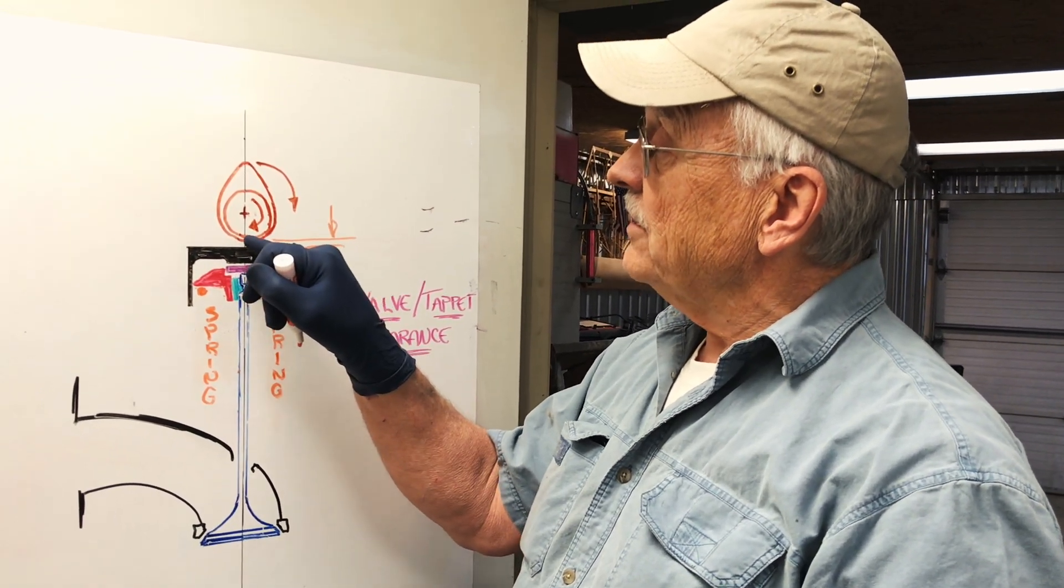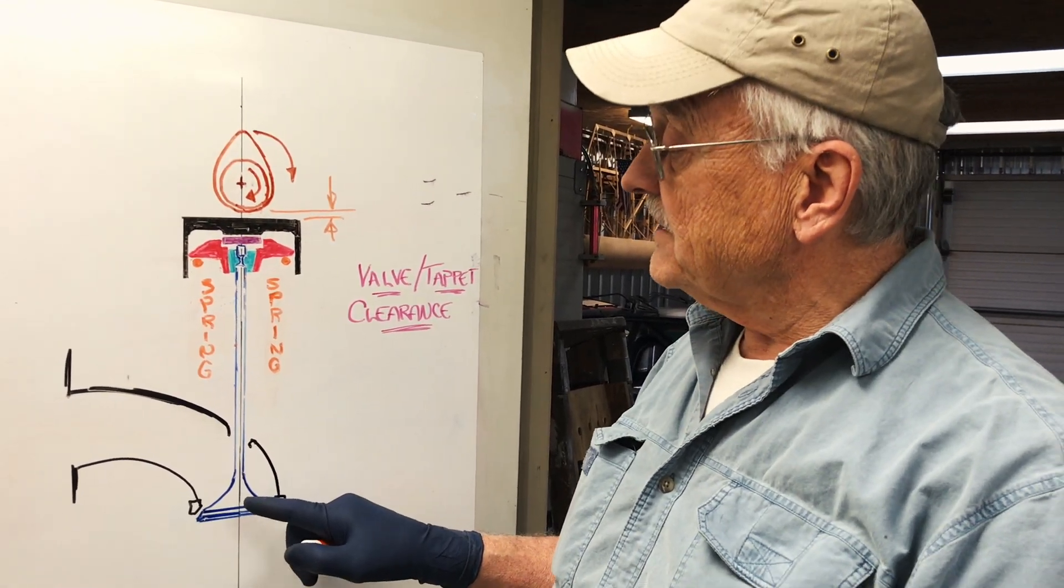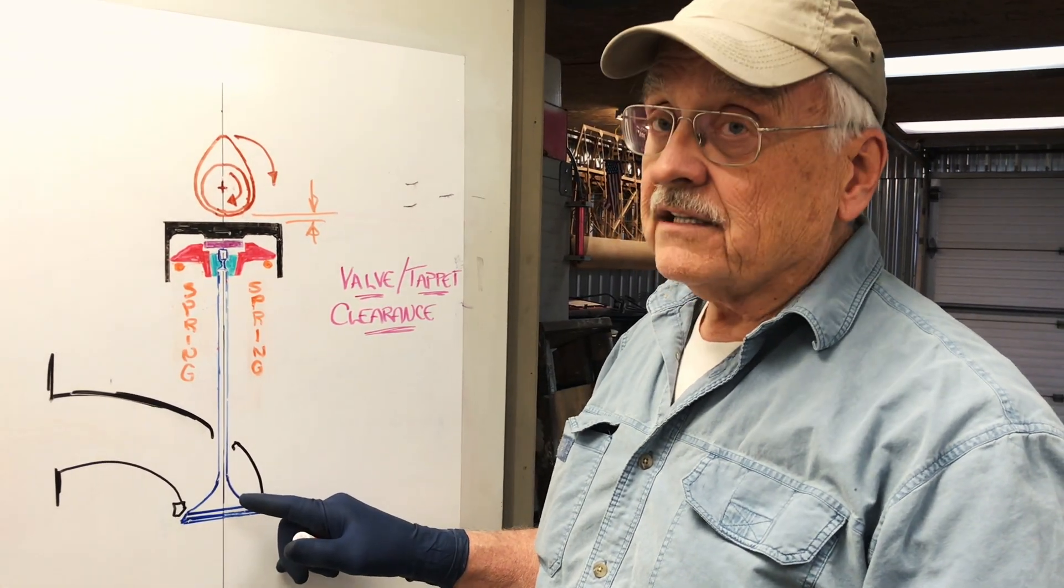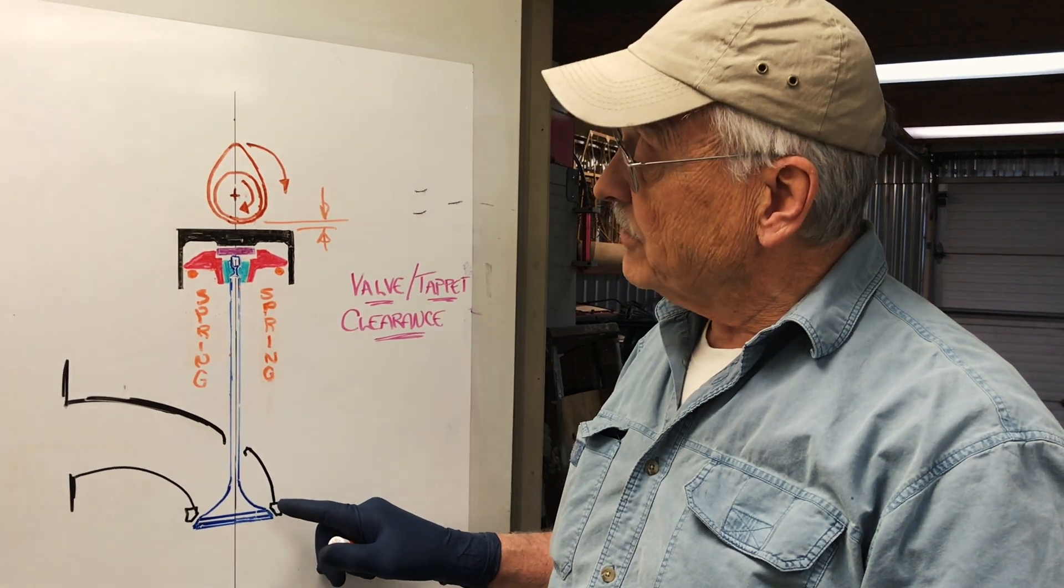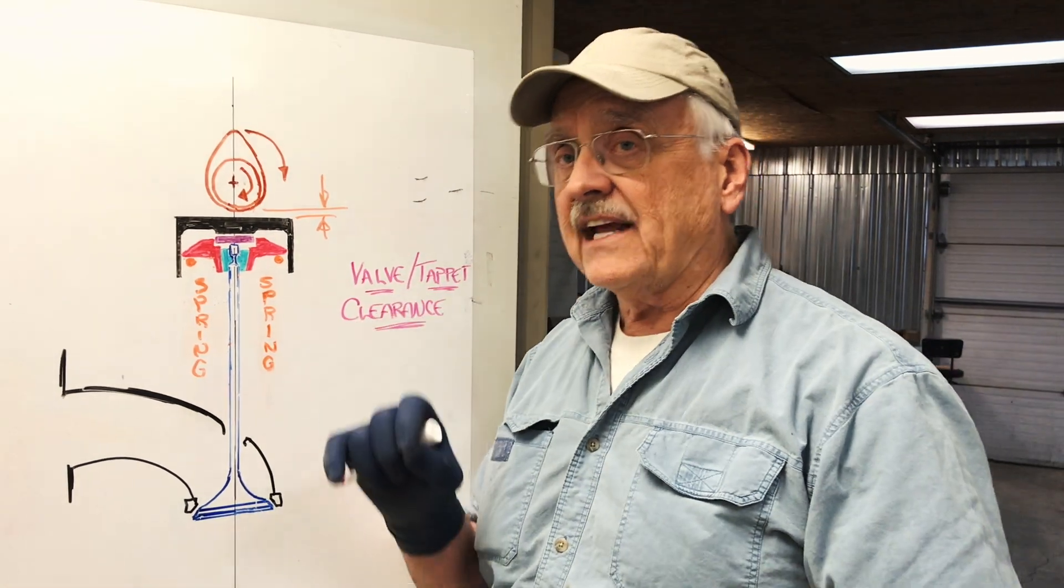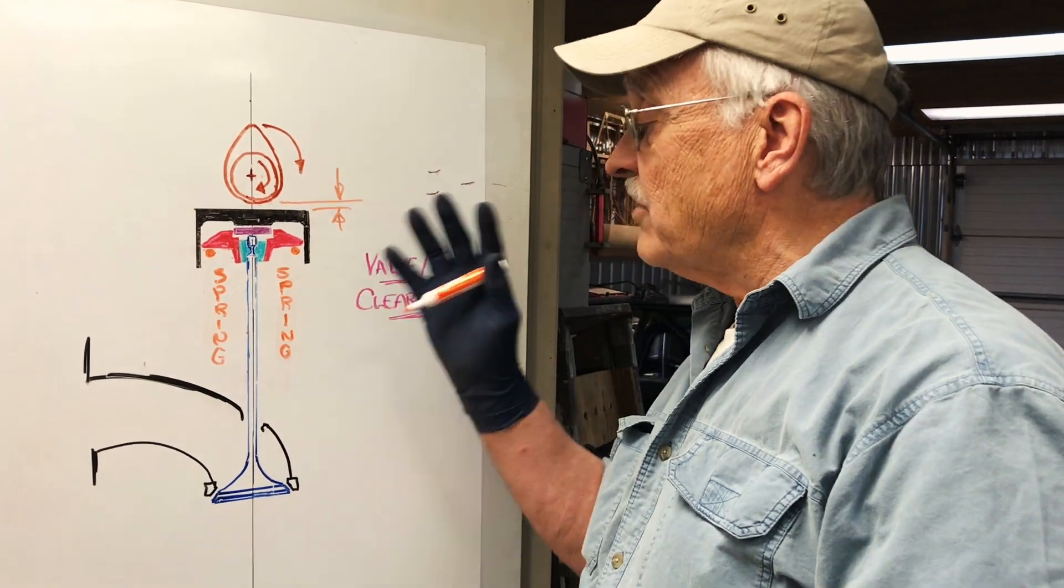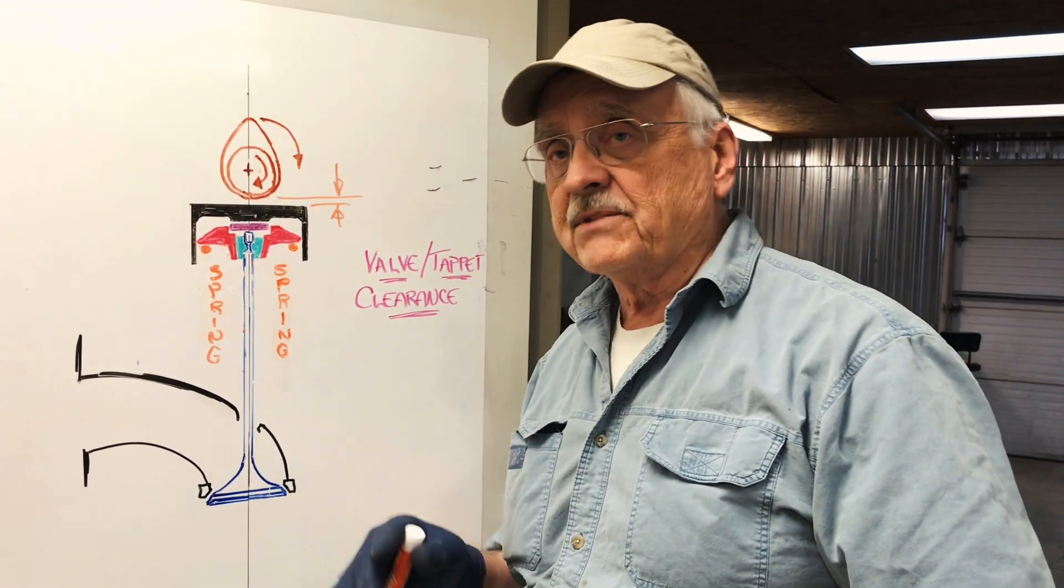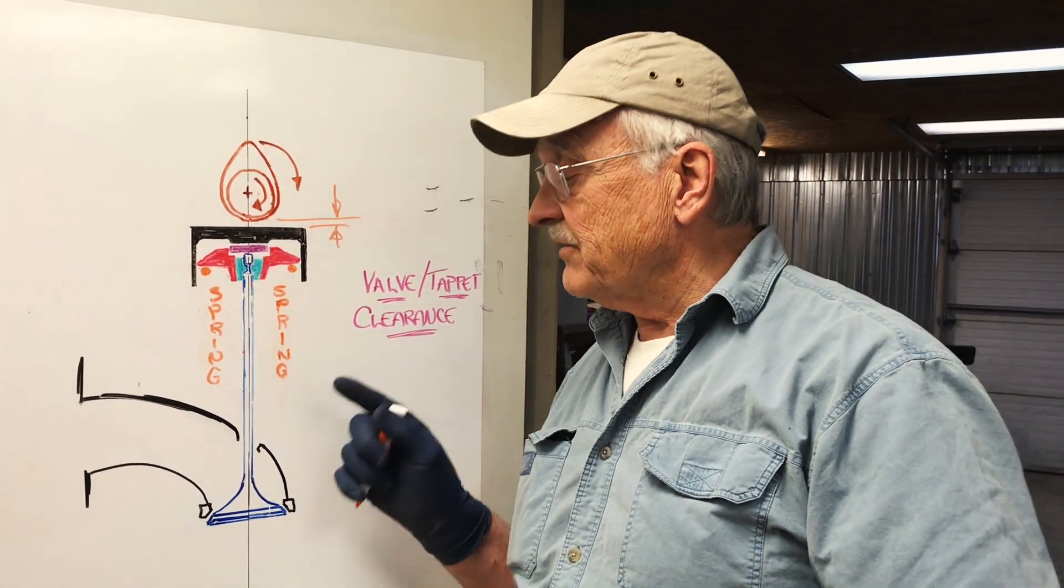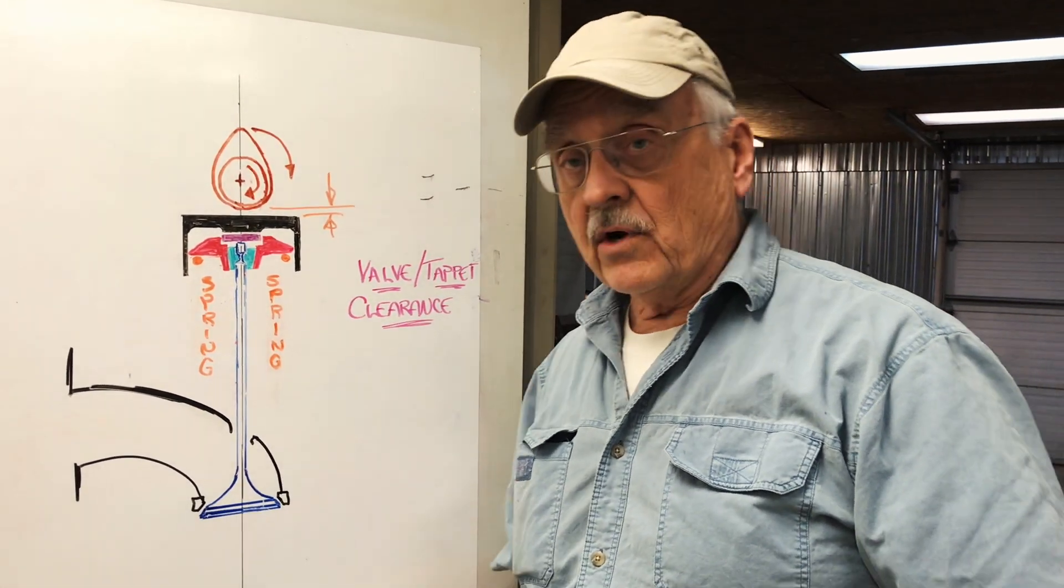The problem is that this valve has to be closed for two reasons. Number one: to seal the cylinder. Number two: to pass heat off to the seat just for that instant that it's closed. It doesn't seem like it'd be closed long enough to do any cooling, but you've got to remember it's closing hundreds or thousands of times per minute. It needs to be closed for that purpose. If it doesn't close all the way, it can't get rid of the heat and that valve is going to burn.